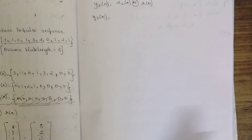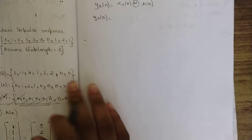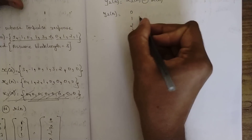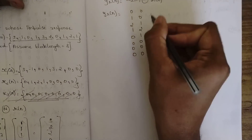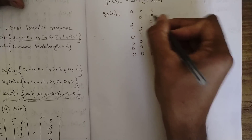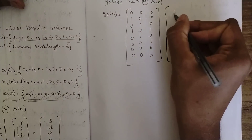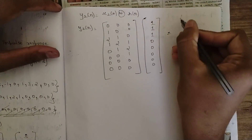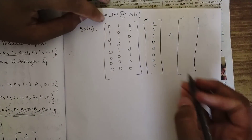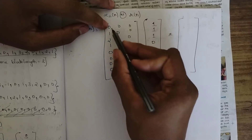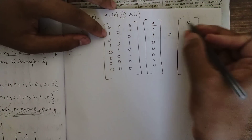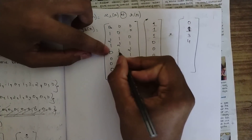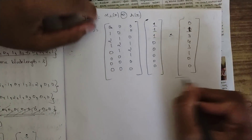Now calculate y2(n). x2(n) = {0,1,2,1,0,0,0,0} circularly convolved with h(n) = {1,1,1,0,0,0,0,0}. Using the same shortcut: y2(n) = {0, 1, 3, 4, 3, 1, 0, 0}.